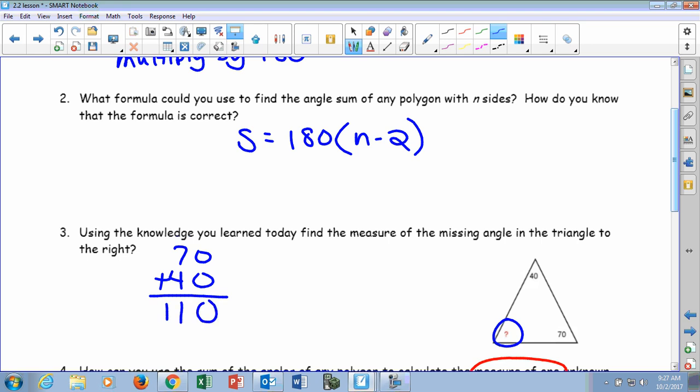And if all the angles inside the triangle equal 180, we're going to take 180 and subtract 110 from it, which gives us 70. So our missing angle here is 70 degrees.